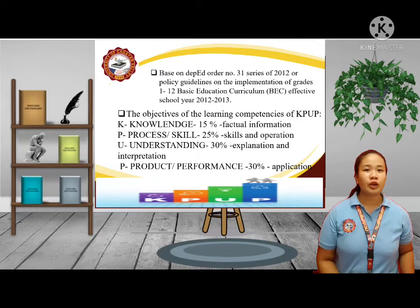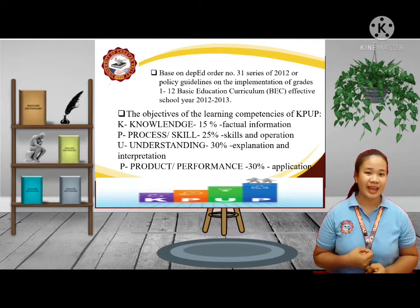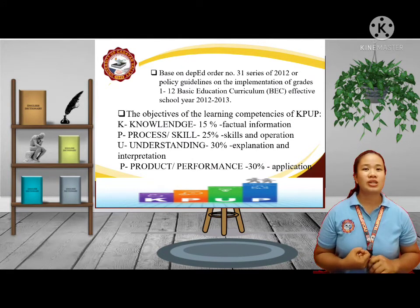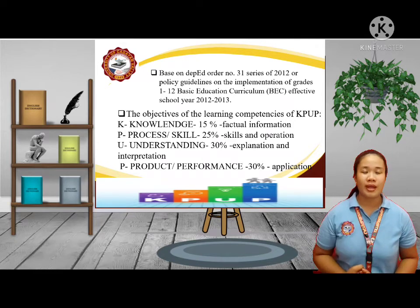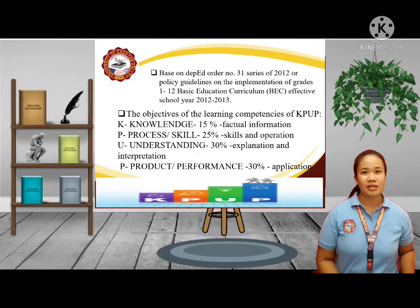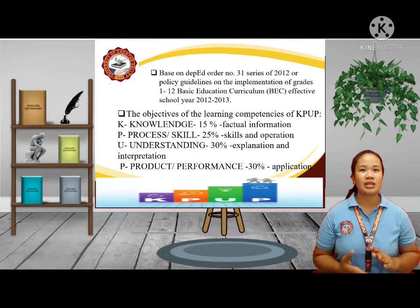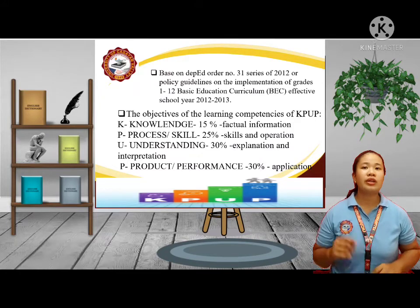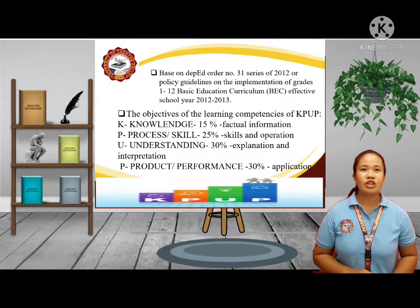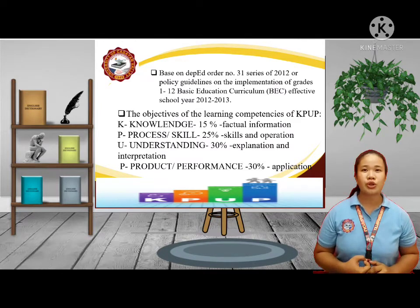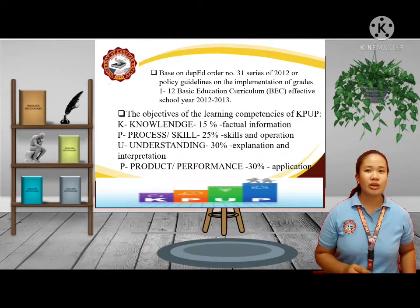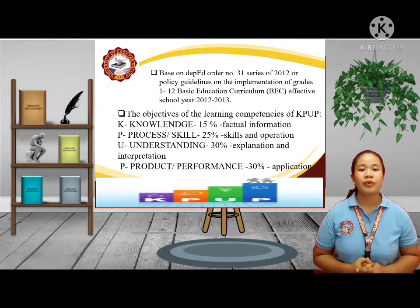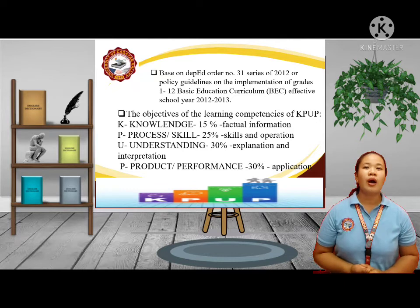The objectives of the learning competencies of KPUP are as follows. First, K — Knowledge — is 15%. It checks factual information, similar to pen-and-paper activities like objective-type quizzes and tests. Second, P — Process or Skill — is 25%. It checks skills and operations like outlining, expressing, and converting information to other forms. Third, U — Understanding — is 30%. It checks big concepts, meaning, principles, explanations, and interpretations. Fourth, P — Product or Performance — is 30%. It checks the actual application of learning through projects. That totals 100%.